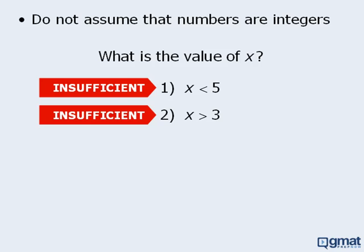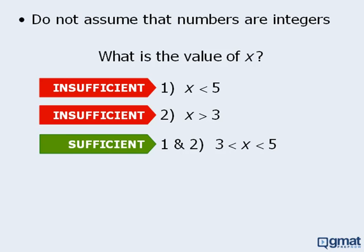If we combine the statements, we see that x is greater than 3 and less than 5. If we assume that x is an integer, we will conclude that x must equal 4, in which case the combined statements would be sufficient.